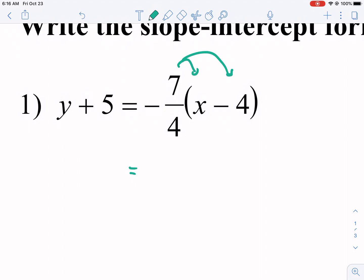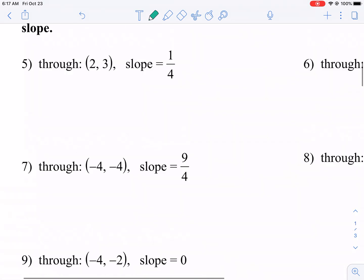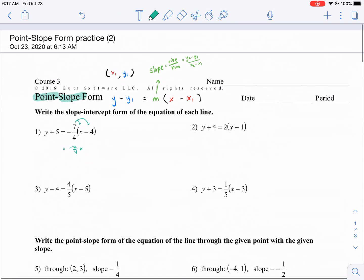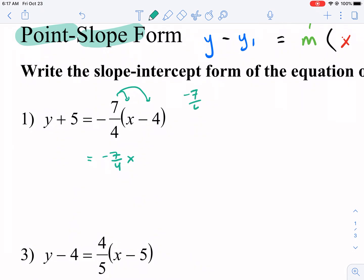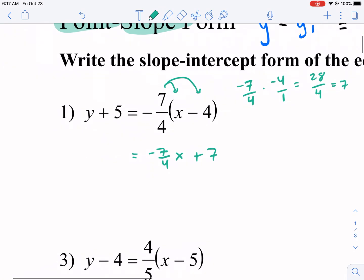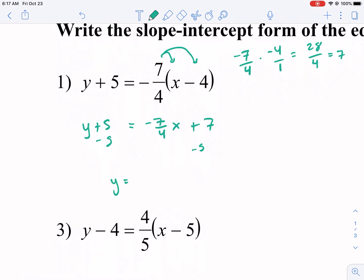So we have negative 7 over 4 times x is negative 7 over 4 x. Then we multiply it by negative 7 over 4 times a negative 4. Put it over 1 and you have positive 28 over 4. That's going to equal 7. So 28 over 4 is 7, and that is our answer there. So we're going to do plus 7. So negative times negative equals positive and it's plus 7. Then we have y plus 5. We subtract 5 from both sides. We only need to worry about combining like terms. We get y equals negative 7 over 4x plus 2. And there you go.